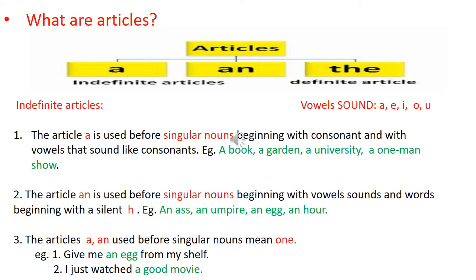What are articles? Articles are A, An, and The. A and An are indefinite articles. The is called the definite article. Let's see the indefinite articles. First point: the article A is used before singular nouns beginning with consonants and with vowels that sound like consonants. For example: a book, a garden, a university, a one-man show.